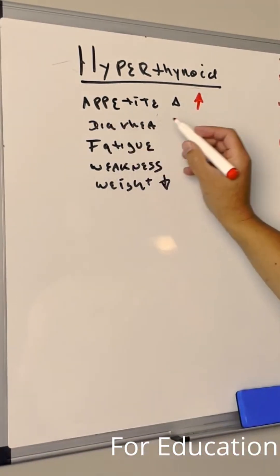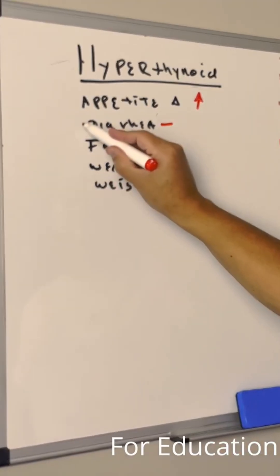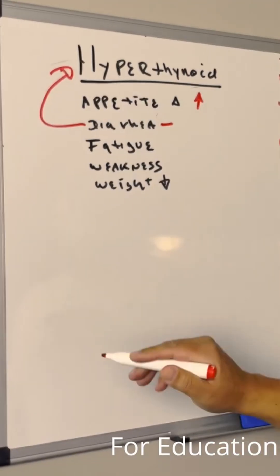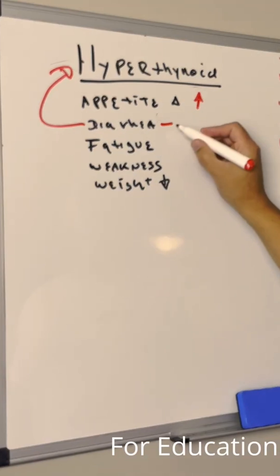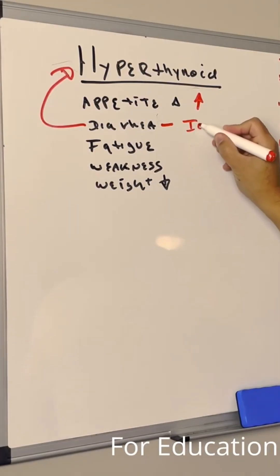Then we have something very important, which is diarrhea. Before we blame diarrhea on hyperthyroidism, we need to make sure that the patient does not have an infection.